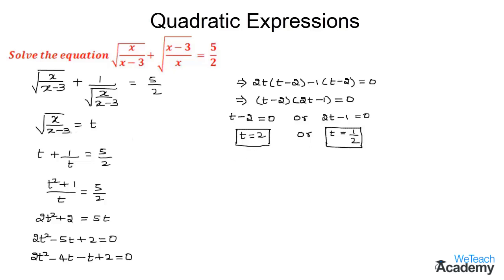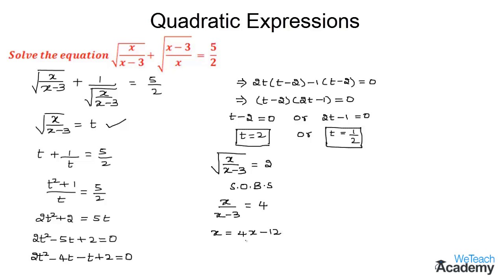Now let us substitute t equals 2. We get the square root of x divided by (x minus 3) is equal to 2. Squaring both sides gives x divided by (x minus 3) equals 4. Multiplying out: x equals 4x minus 12. Transferring x to the other side gives 4x minus x equals 12, so 3x equals 12, therefore x equals 4.